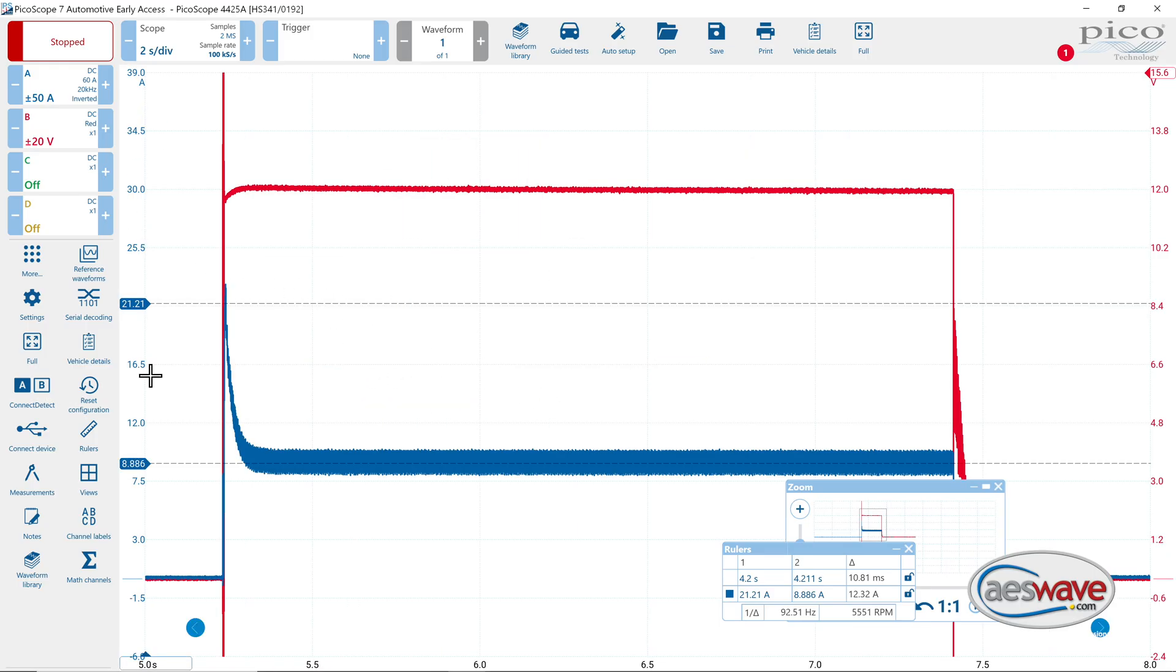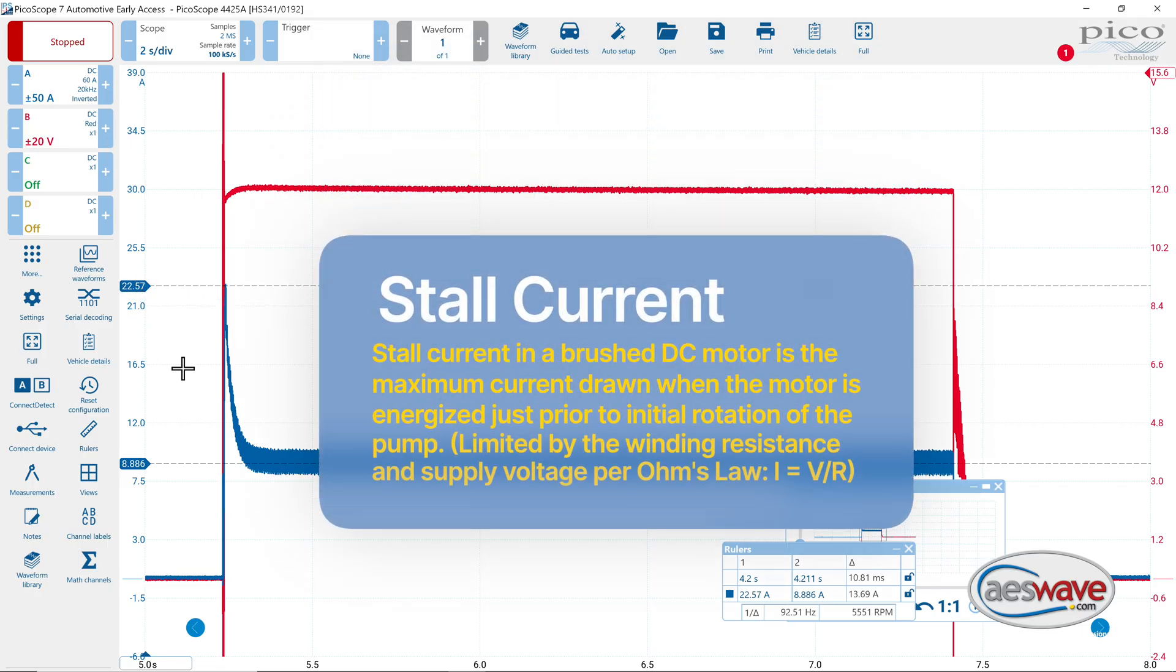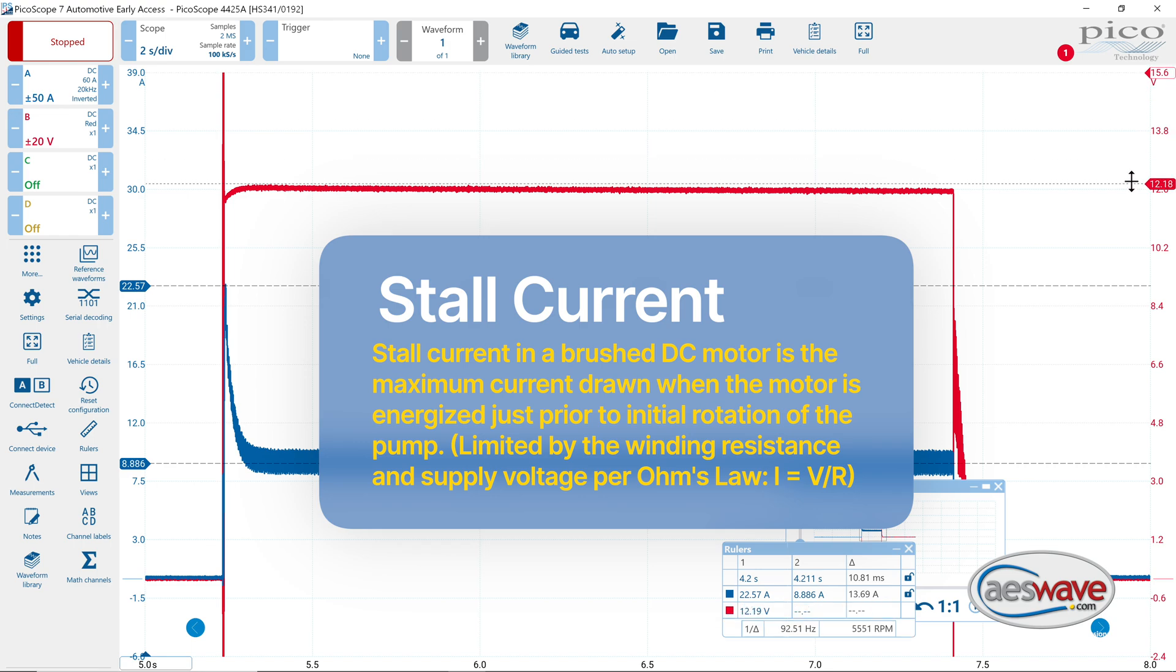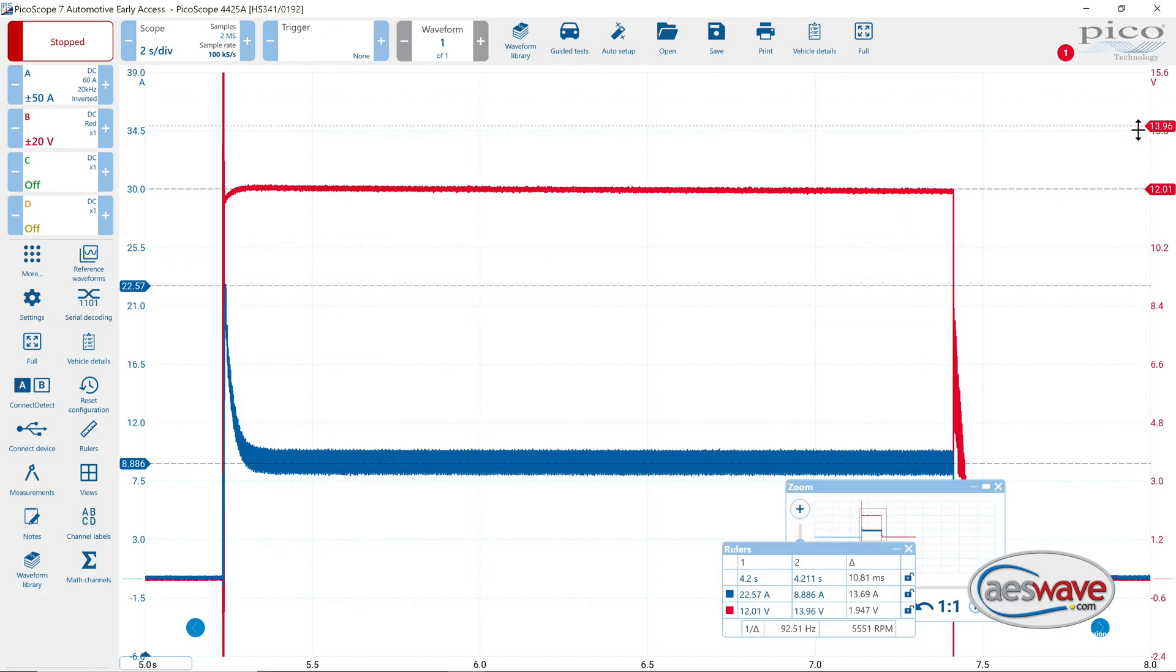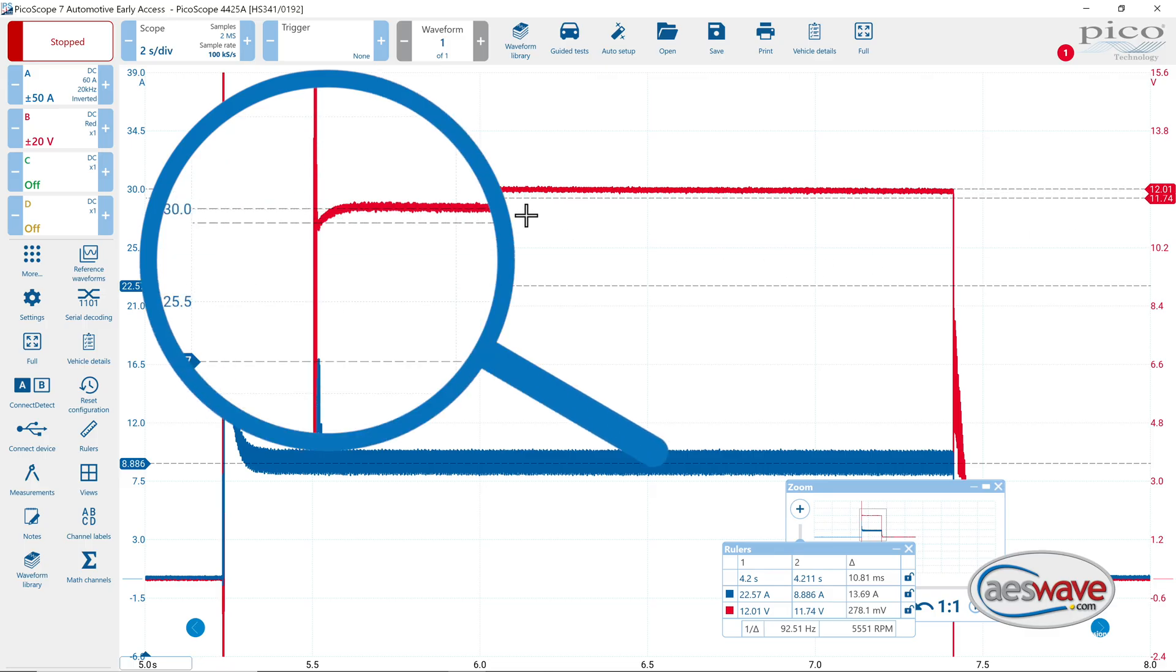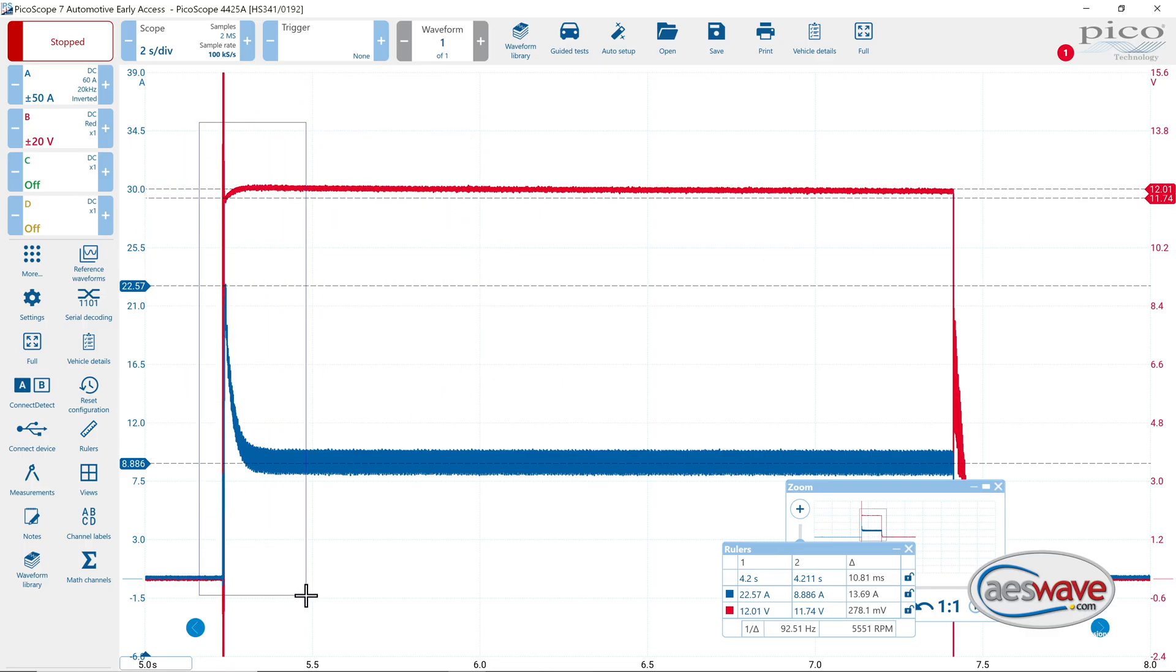So there's our stall current right there. We can grab a cursor here. You can see our operating voltage is about 1201. You can see where the voltage was loaded right there during the stall event on the pump.